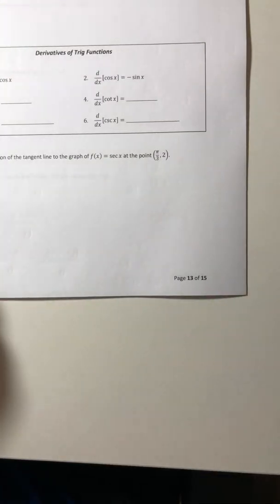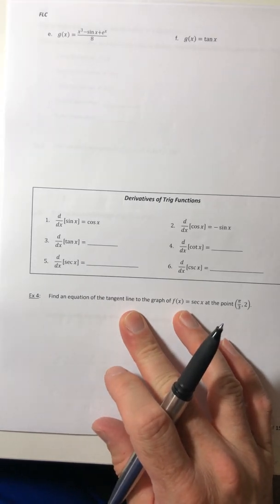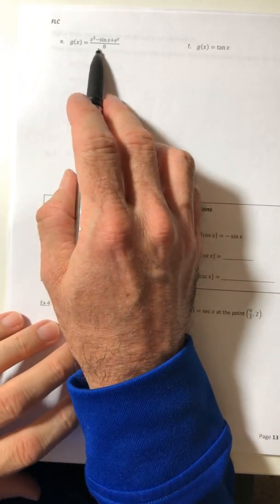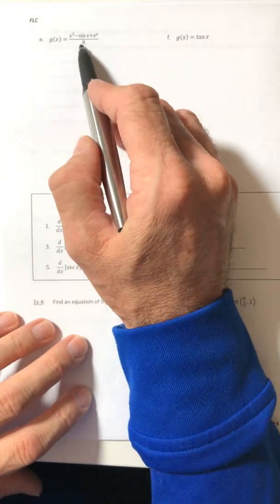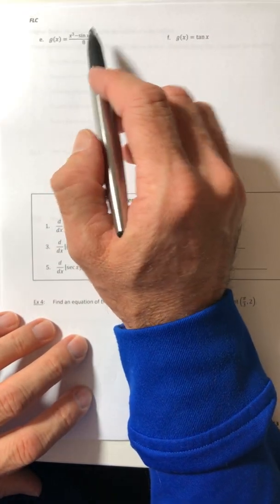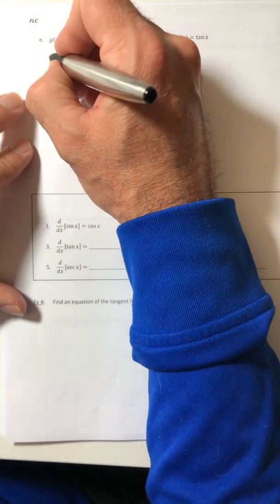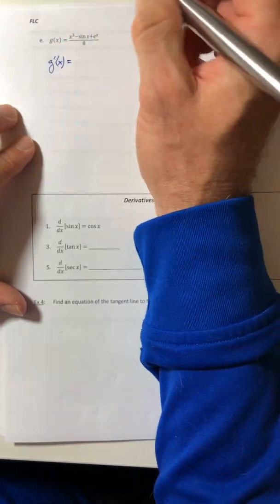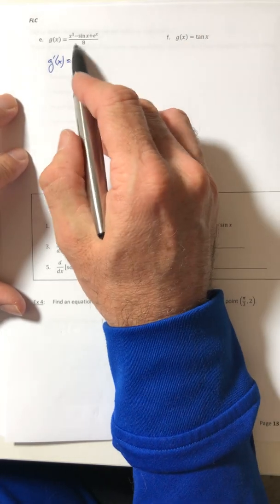All right. Let's try this next one. So g of x equals that. So if we notice, we have a constant in the denominator. So it's like the previous example. I don't need to use the quotient rule with this. I can, but it's a little bit faster if I don't.